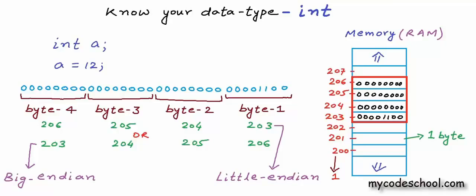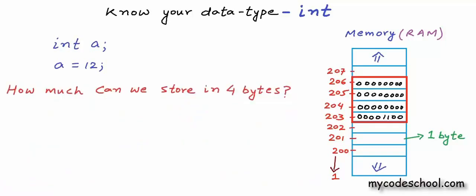This is how data gets stored. We get finite space in memory for a variable. Depending on the data type, we get a block of memory containing some bytes. Byte is the lowest unit in memory; the minimum memory that can be allocated is 1 byte. Since we get finite space for a variable, we cannot store an infinite number of values — there is a limit. So how much can we store in 4 bytes? Let's deduce this step by step.